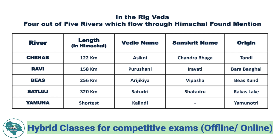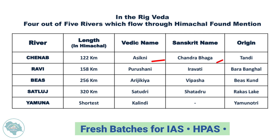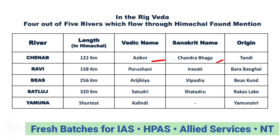When we talk about their Vedic names, Sanskrit names, and origins: Chenab flows 122 km in Himachal, has the Vedic name Asikani and Sanskrit name Chandrabhaga. Its origin is at the confluence of Chandra and Bhaga rivers at Tandi.